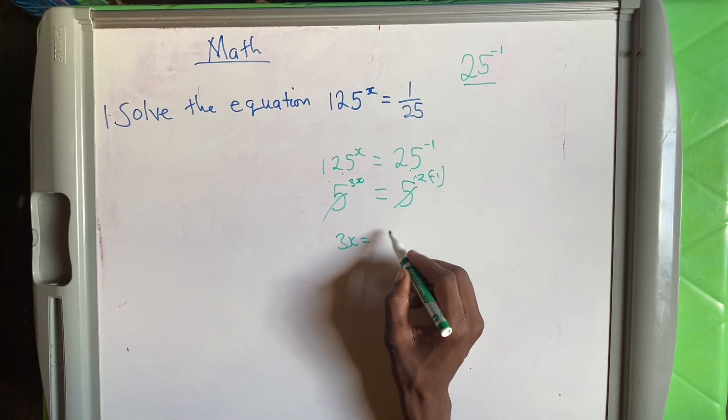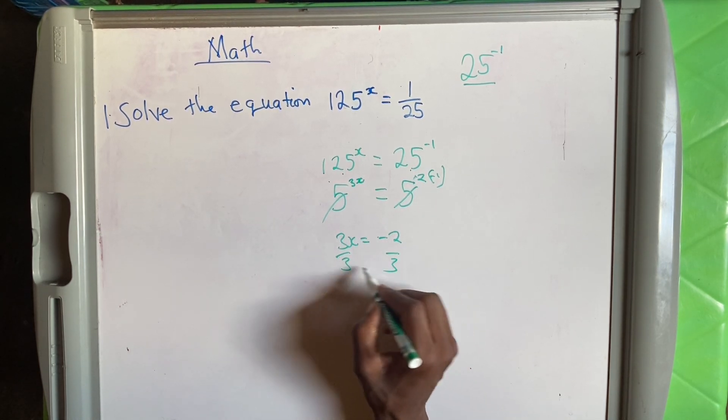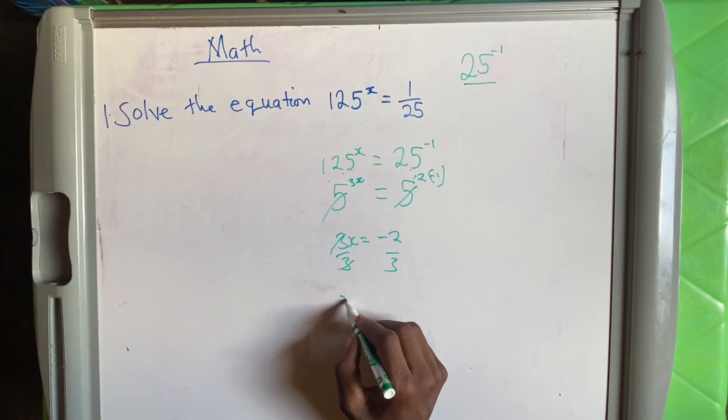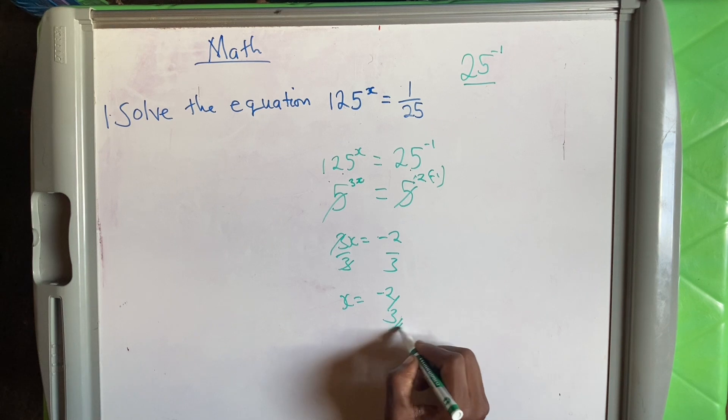Divide by 3, divide by 3. That goes, x is equals to negative 2 over 3.